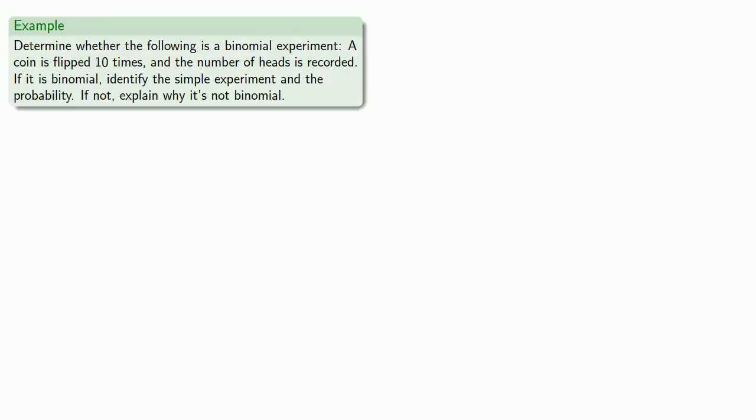Let's determine if the following experiment is binomial: a coin is flipped ten times and the number of heads is recorded. If it's binomial, we want to identify the simple experiment and the probability. Otherwise, we want to explain why it's not binomial.